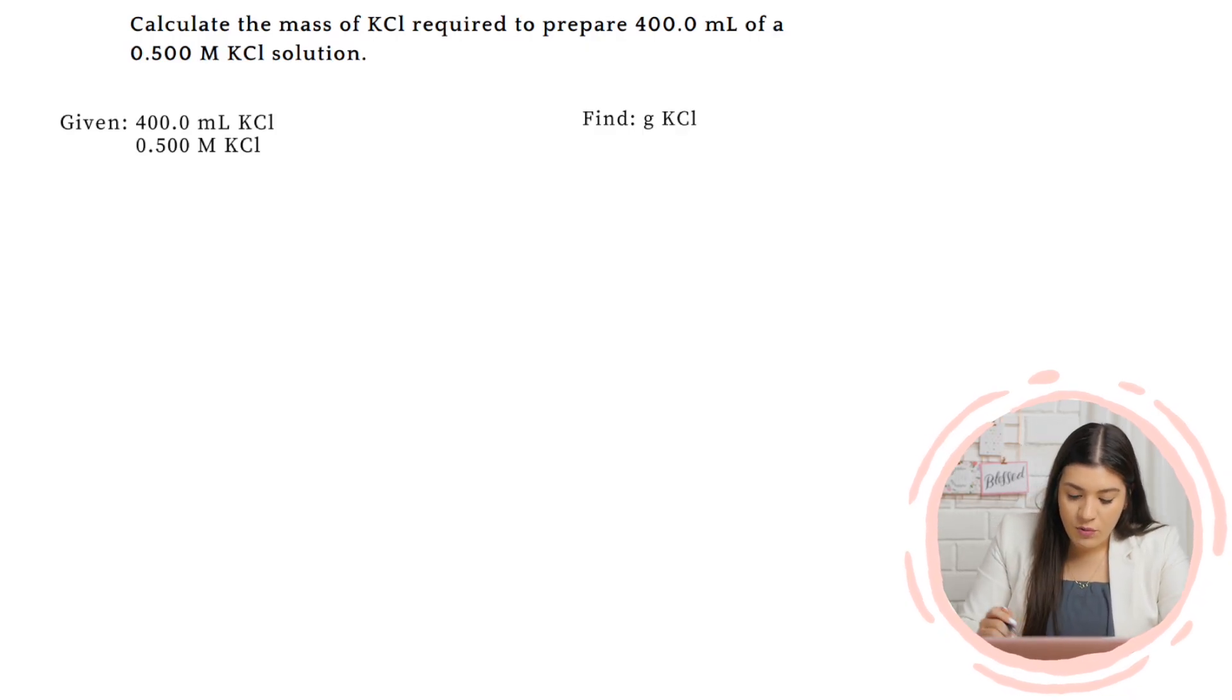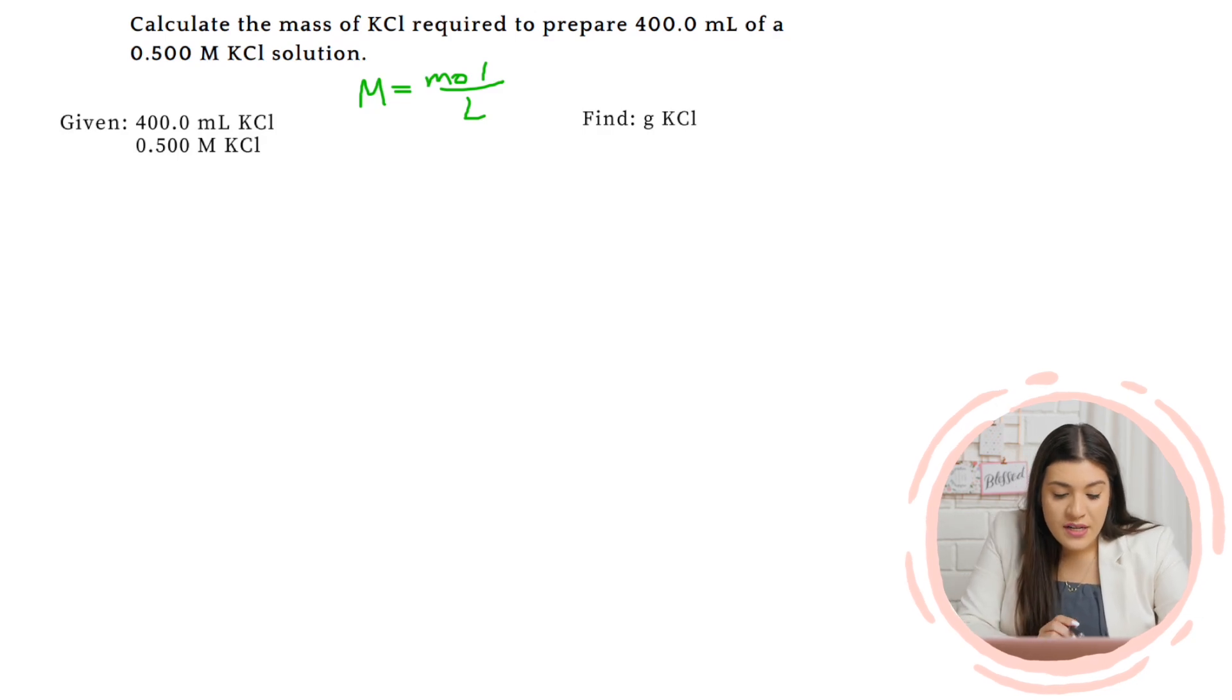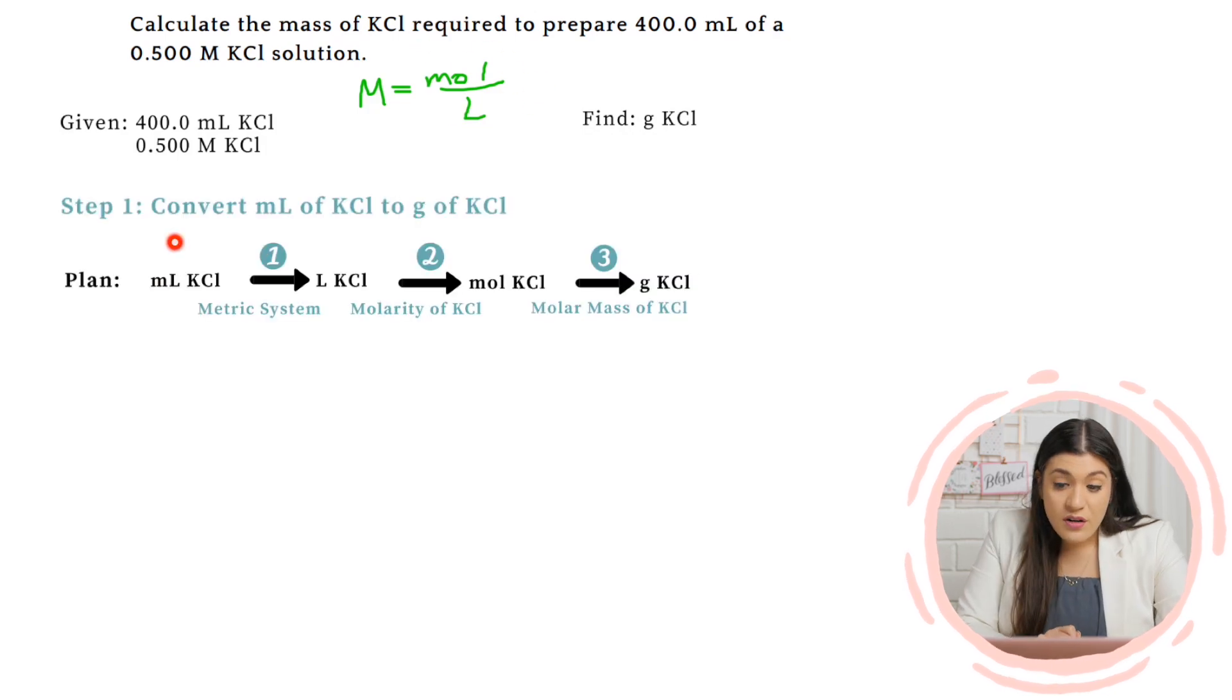Where I want us to start and what I want us to know is that molarity is moles over liters. How we're going to approach this question is I'm going to start off with the given value that doesn't have two units or isn't a conversion factor. Our conversion factor is molarity because it allows us to go from one unit to another. While this first volume, that's where we're going to start off with. So typically, you're going to start off with the given value that only has one unit.